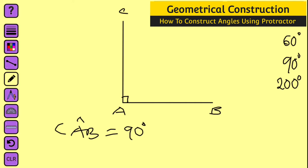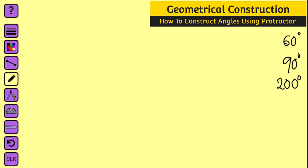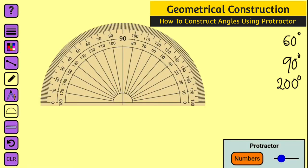Now let us go ahead and construct angle 200 degrees. But before we start, let us observe the angles on our protractor — you can see on our protractor we only have from 0 to 180 degrees. So how can we construct 200 degrees? We know that we need 20 degrees extra to complete 200 degrees. So how can we do that? Let us construct our straight line.